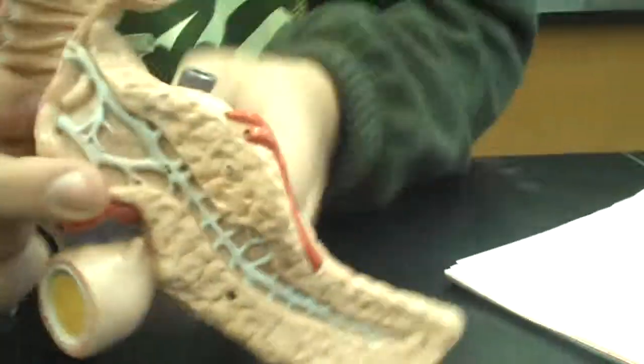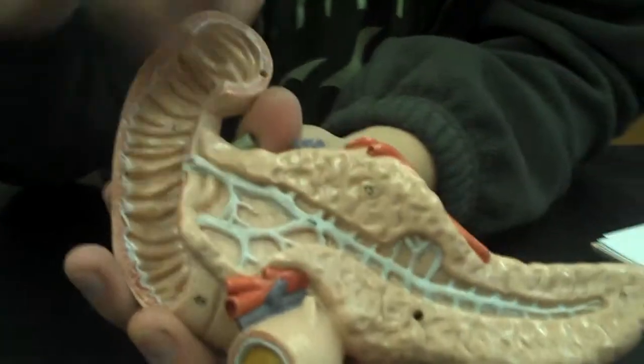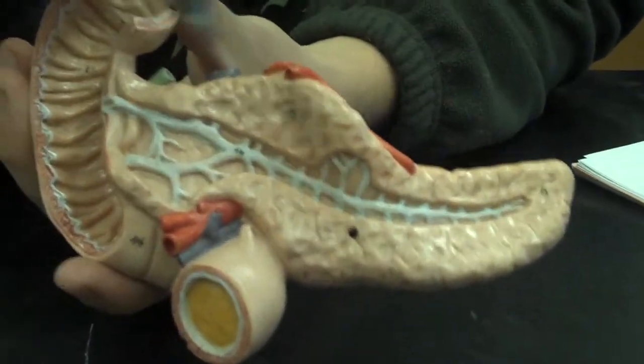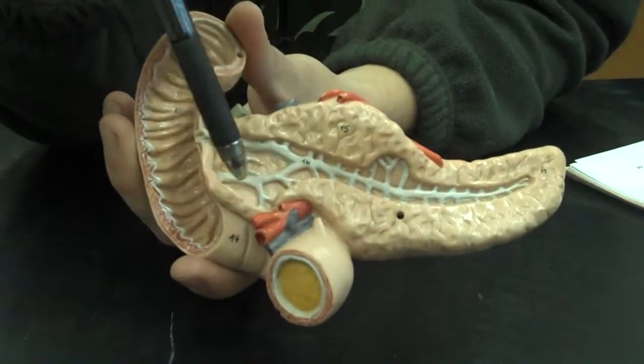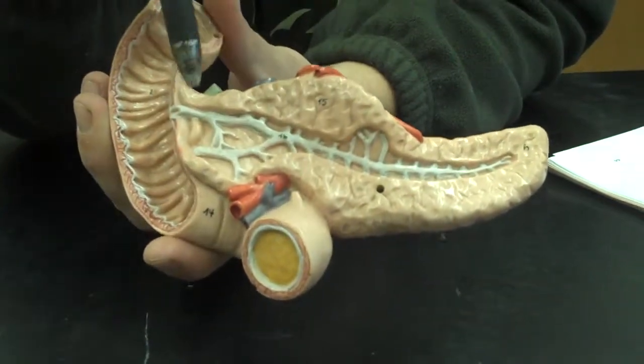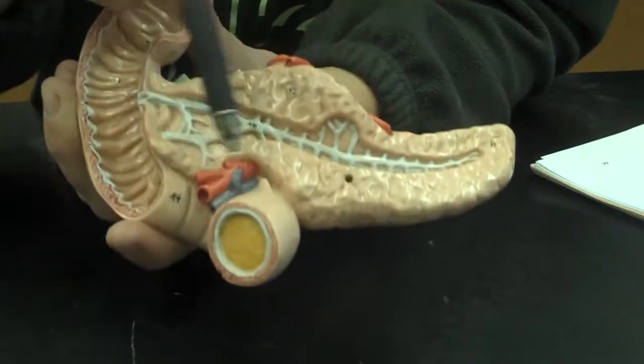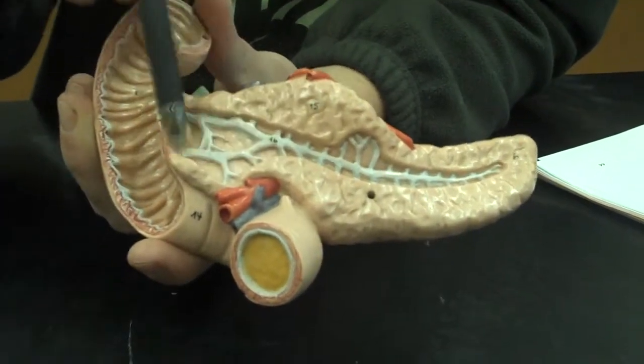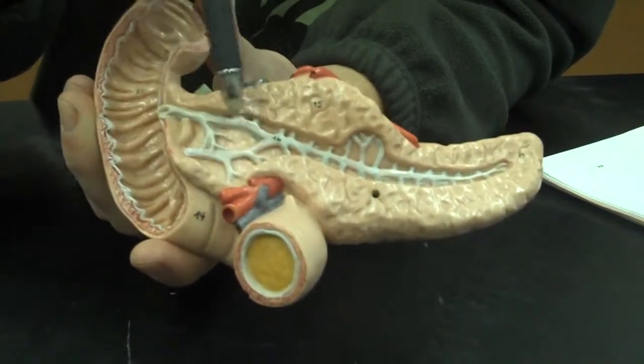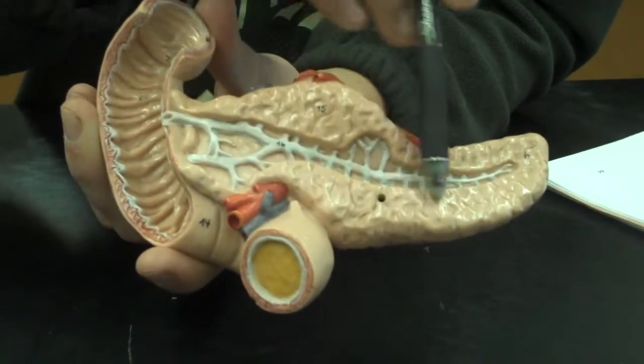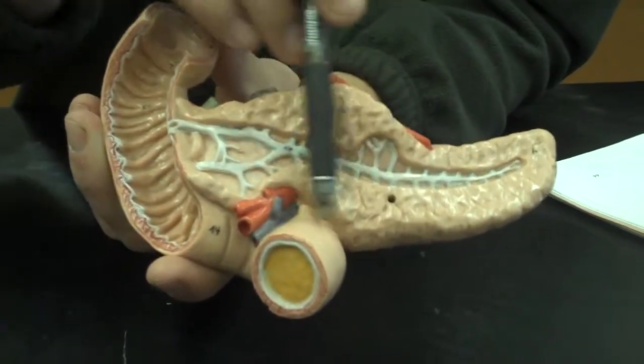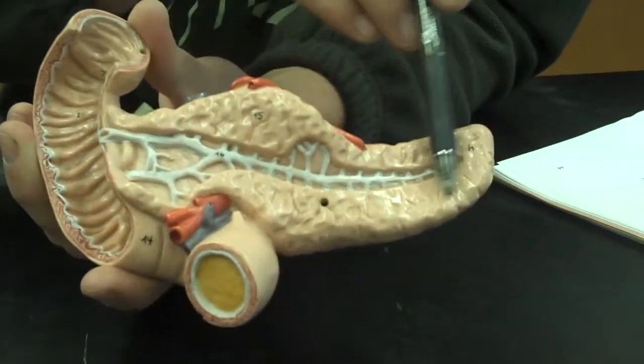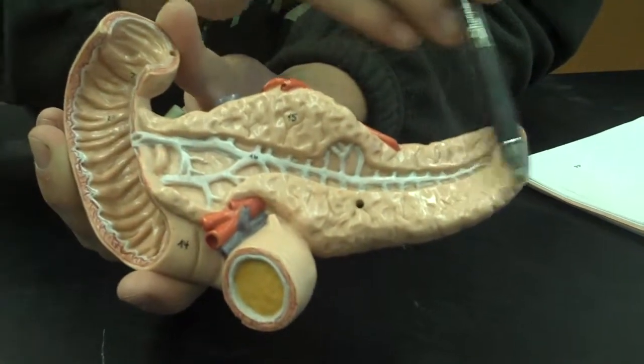Next up we have the pancreas right here which is located behind the stomach. Three parts of the pancreas, they're pretty straightforward. The first part is this larger region right here, the head of the pancreas. The central region is the body of the pancreas. And this region at the end is the tail of the pancreas.